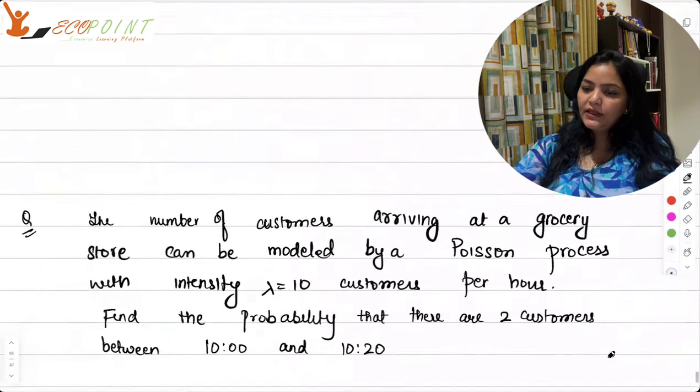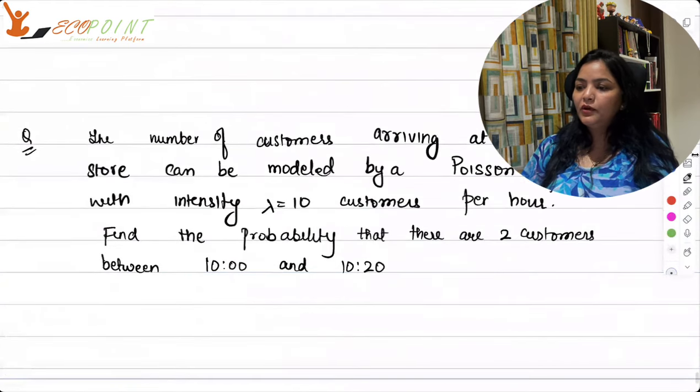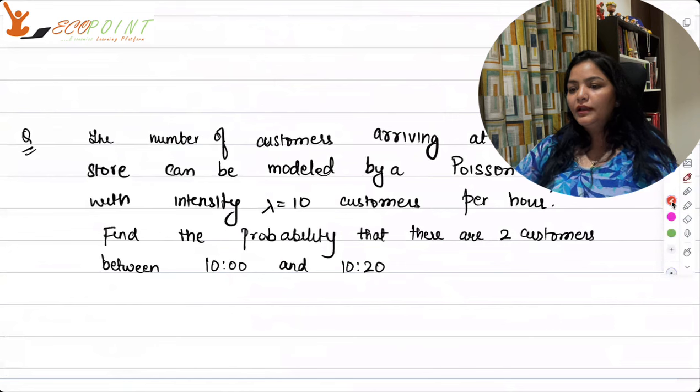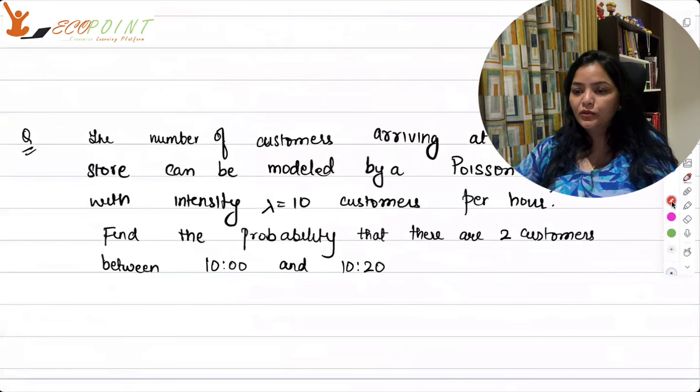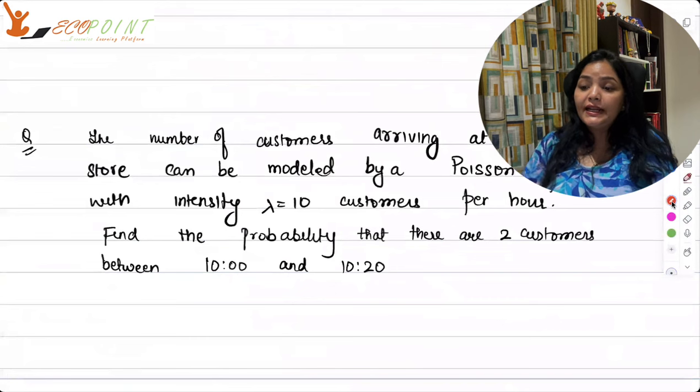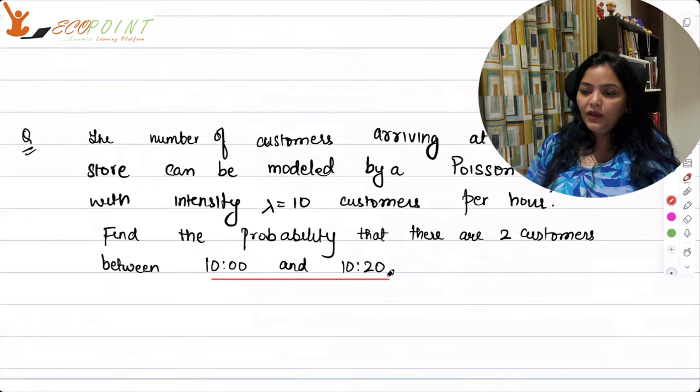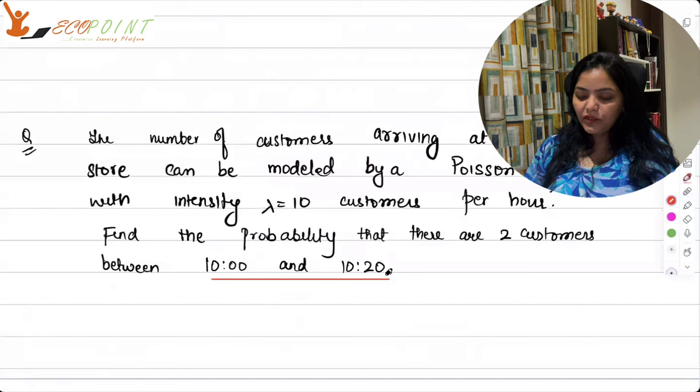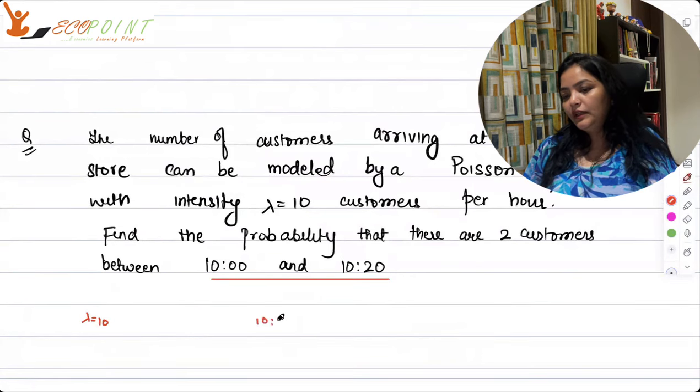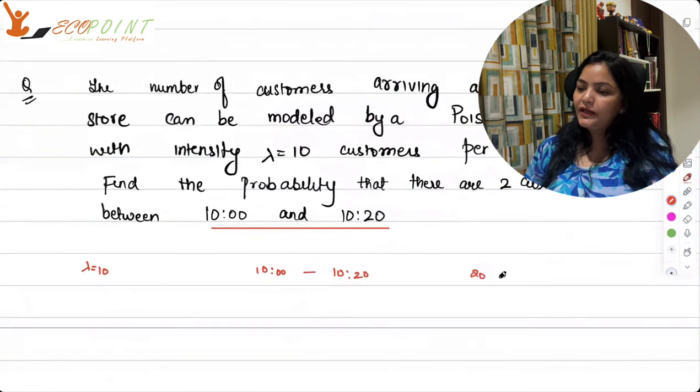Now let's take an example where we will use it. The number of customers suppose are arriving at a grocery store can be modeled by poison process with intensity, the rate is lambda equals to 10, 10 customers per hour. Find the probability that there are two customers between 10 and 1020. So what is the probability that there are two customers? Lambda is 10. Now your time interval, that is 10 to 1020, that's your time interval. So 20 minutes, right?